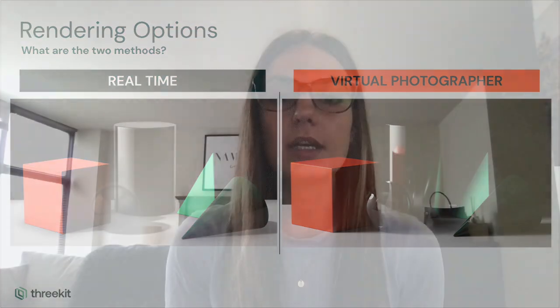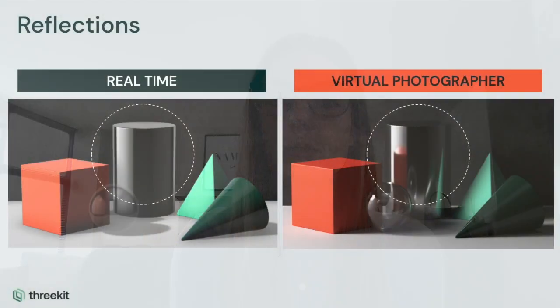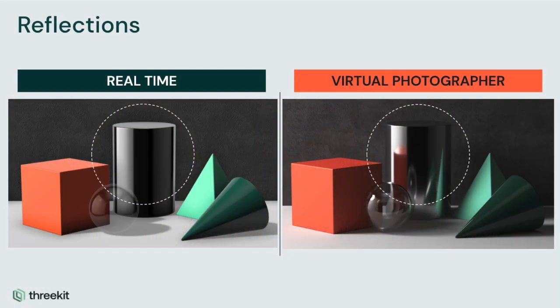Next is rendering — this is the actual act of generating the image. In this stage, the 3D modeling software converts the model into a high-resolution image that can then be incorporated into a wide range of visual content.